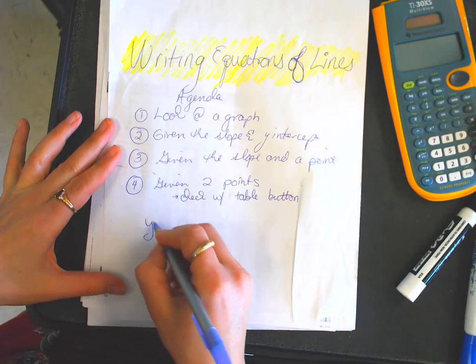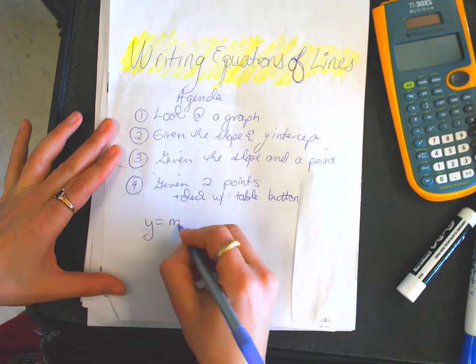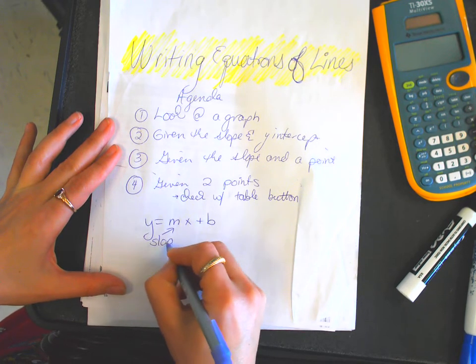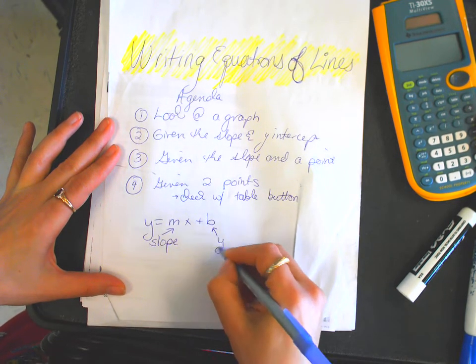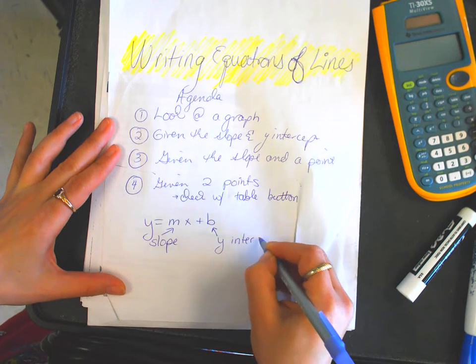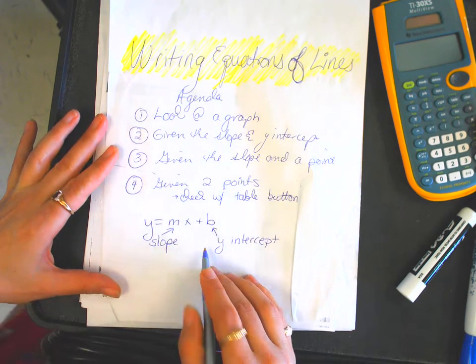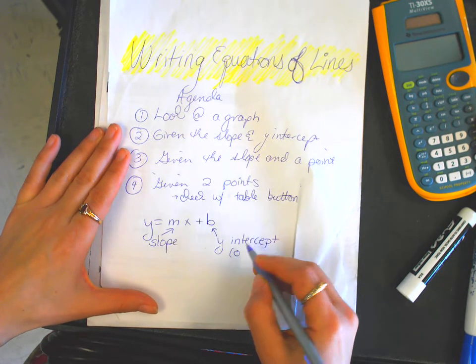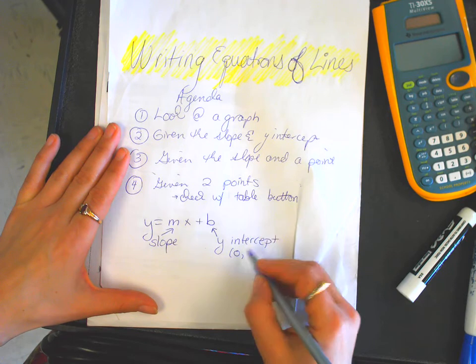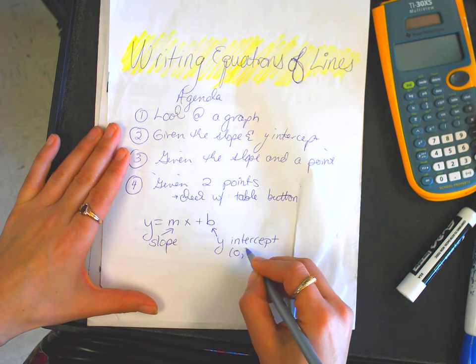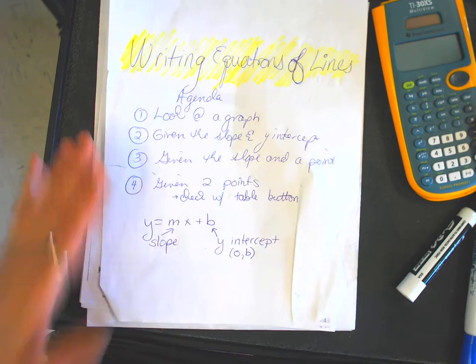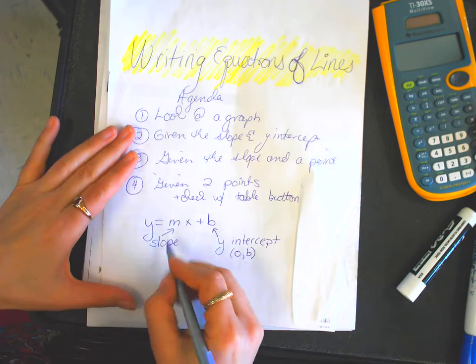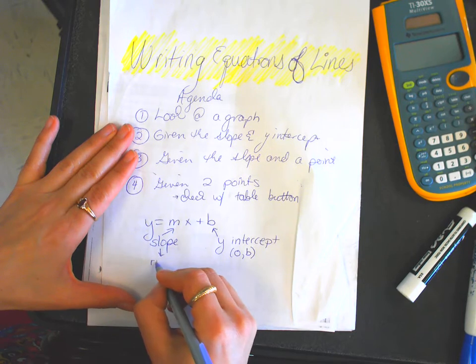We need to know the equation of a line is in the form y equals mx plus b. m is the slope, b is the y-intercept. Intercept means where something crosses the y-axis. By the way, slope is rise over run.